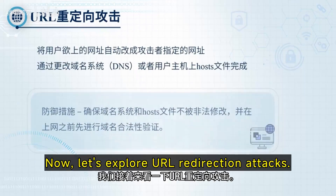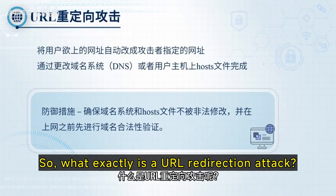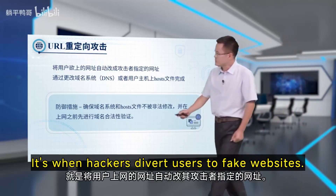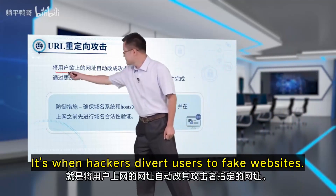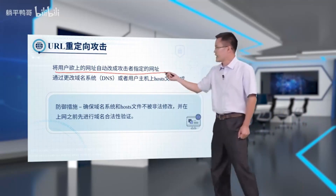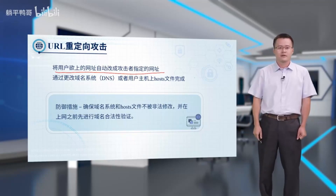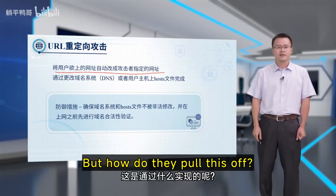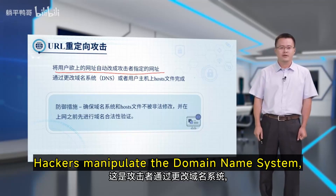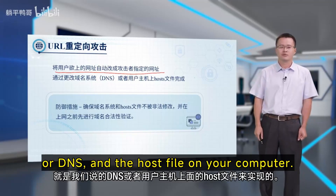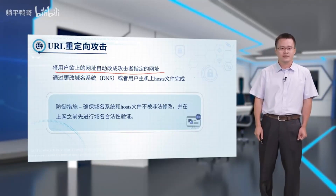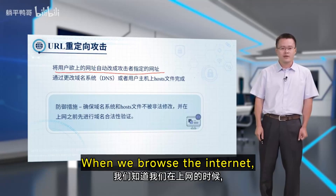Now let's explore URL redirection attacks. A URL redirection attack is when hackers divert users to fake websites. How do they pull this off? Hackers manipulate the Domain Name System, or DNS, and the host file on your computer. When we browse the internet, we type a web address like 'sendw.example.com' to visit a specific website.